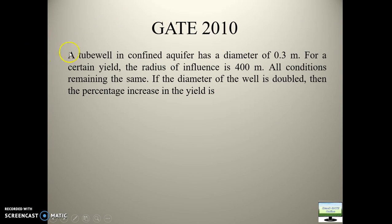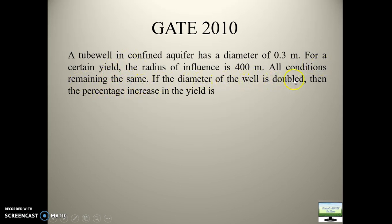Now see this Z2010 question. This is a confined aquifer problem — note that diameter is given, not radius. Please note down this diameter. For the well, the radius of influence is given. The formula to use here is H minus H. All conditions are the same, but if the diameter of the well is doubled, we need to find the increase in discharge.